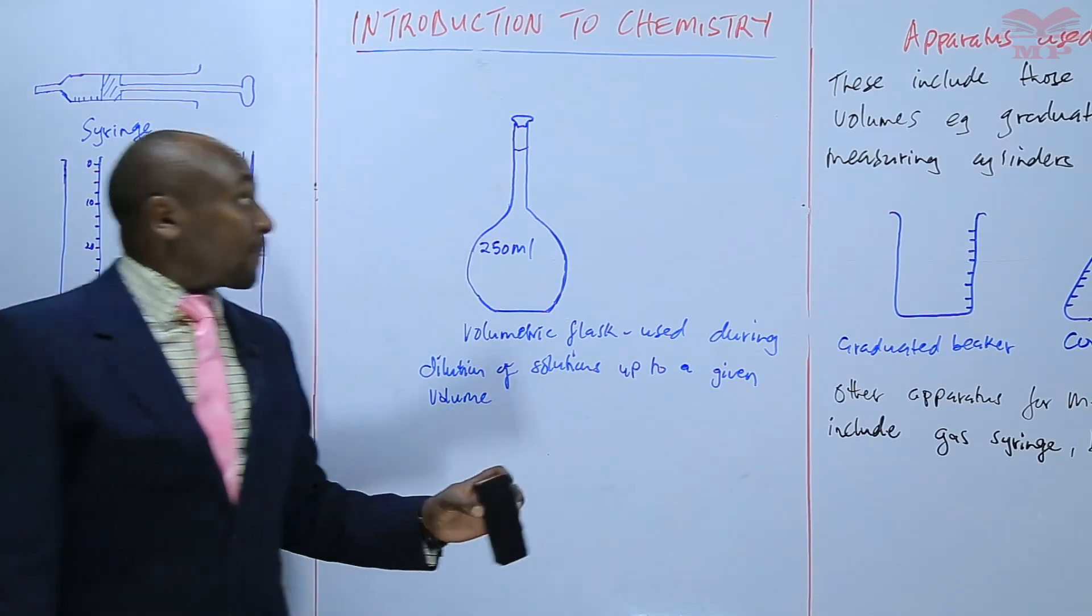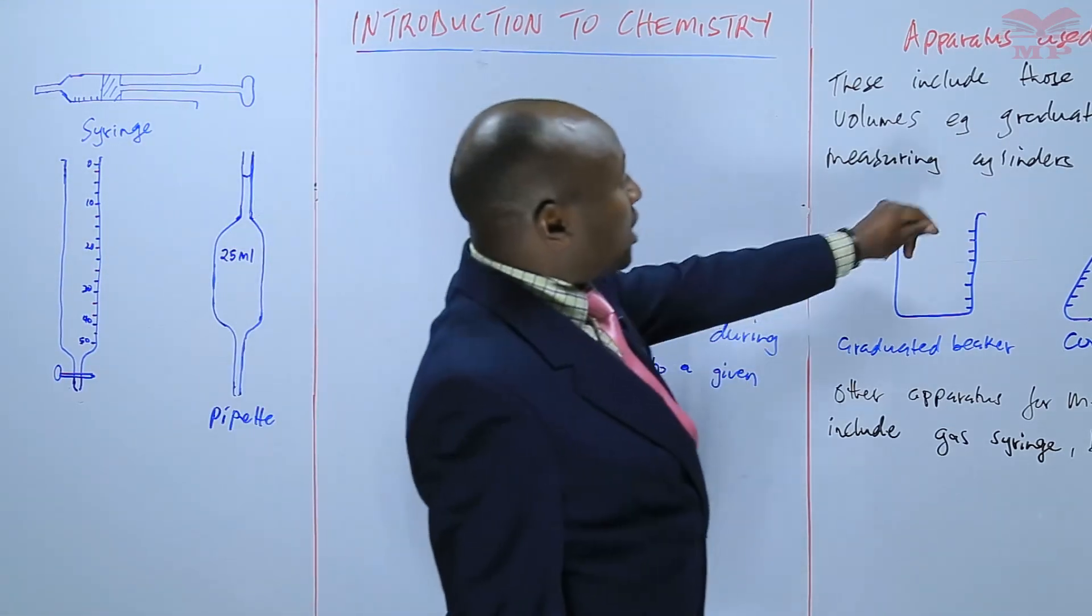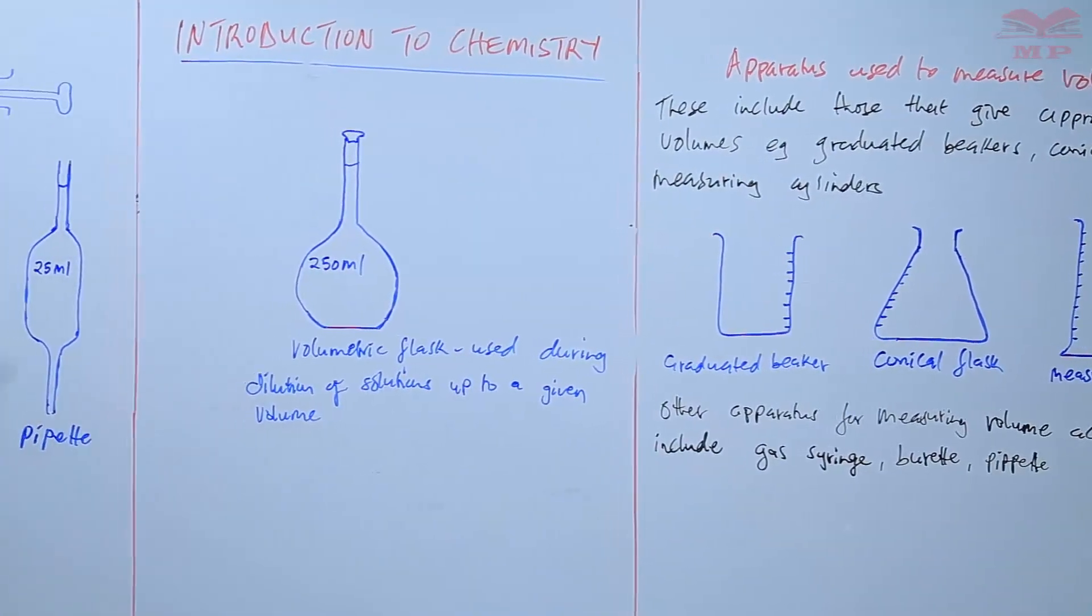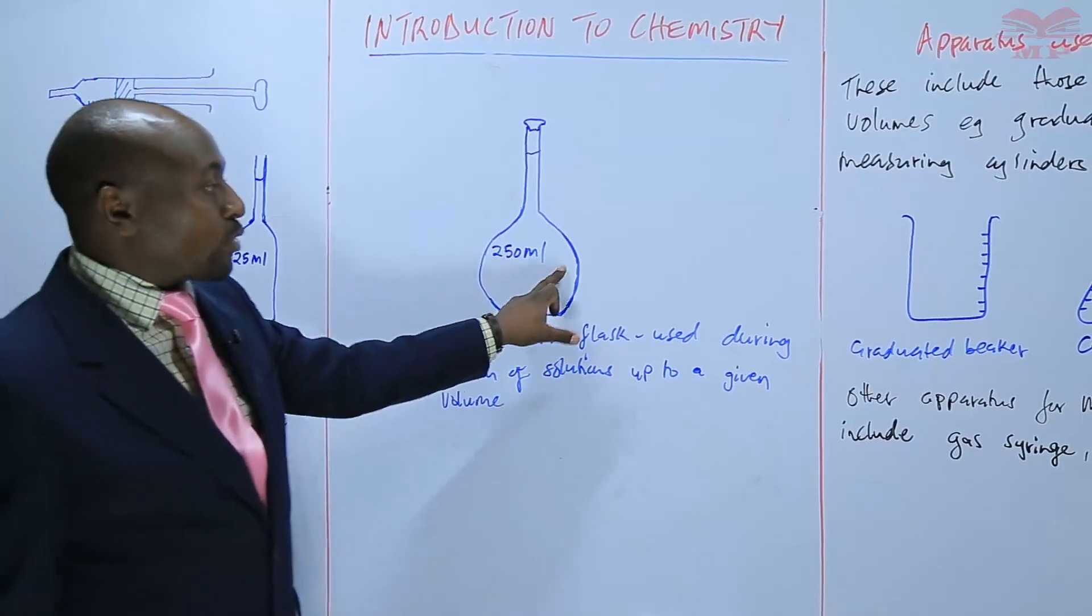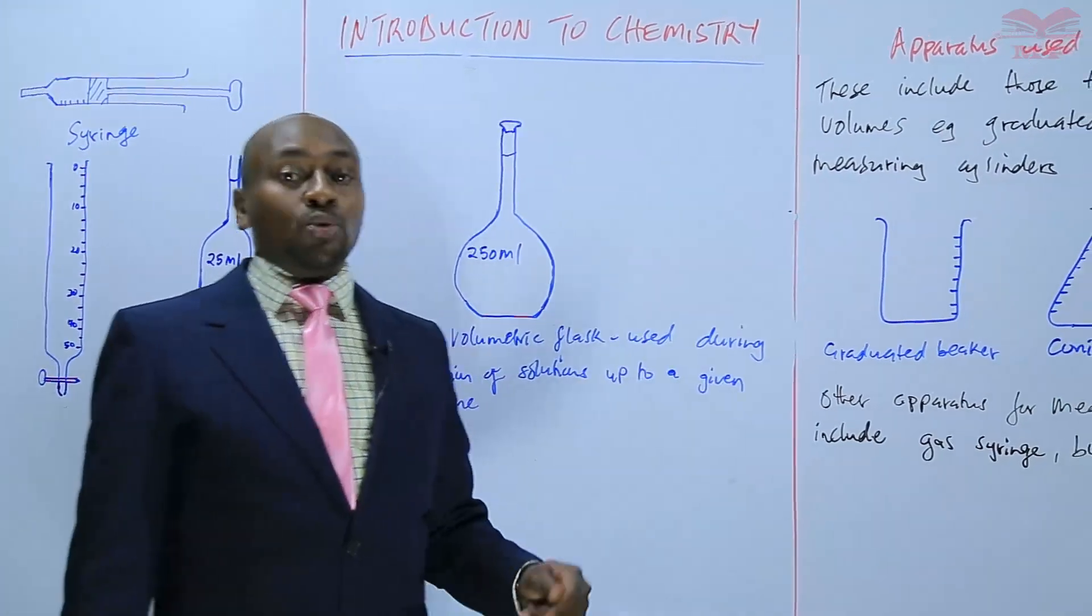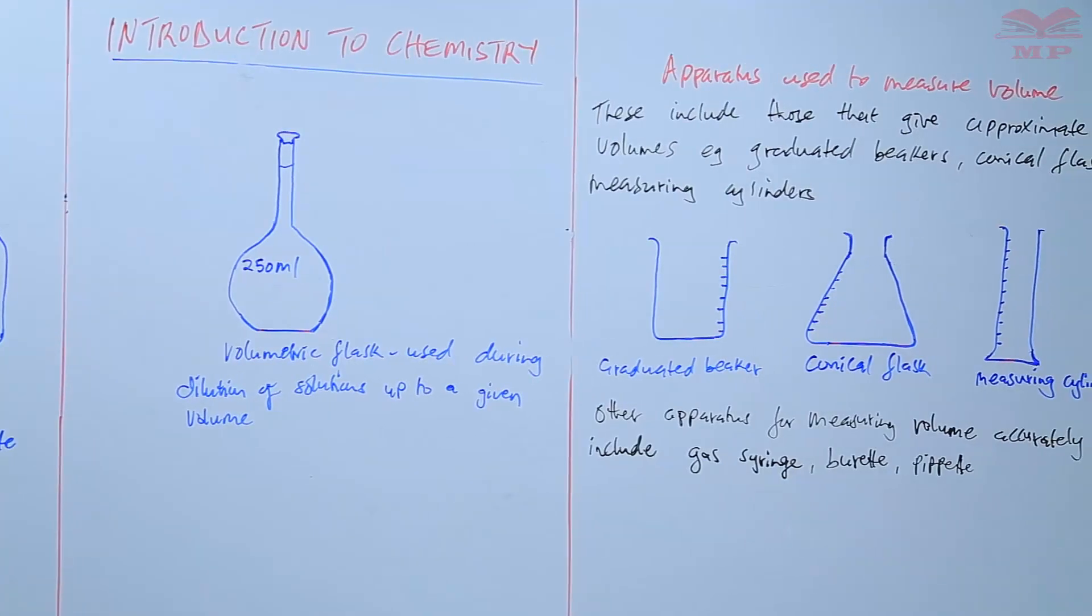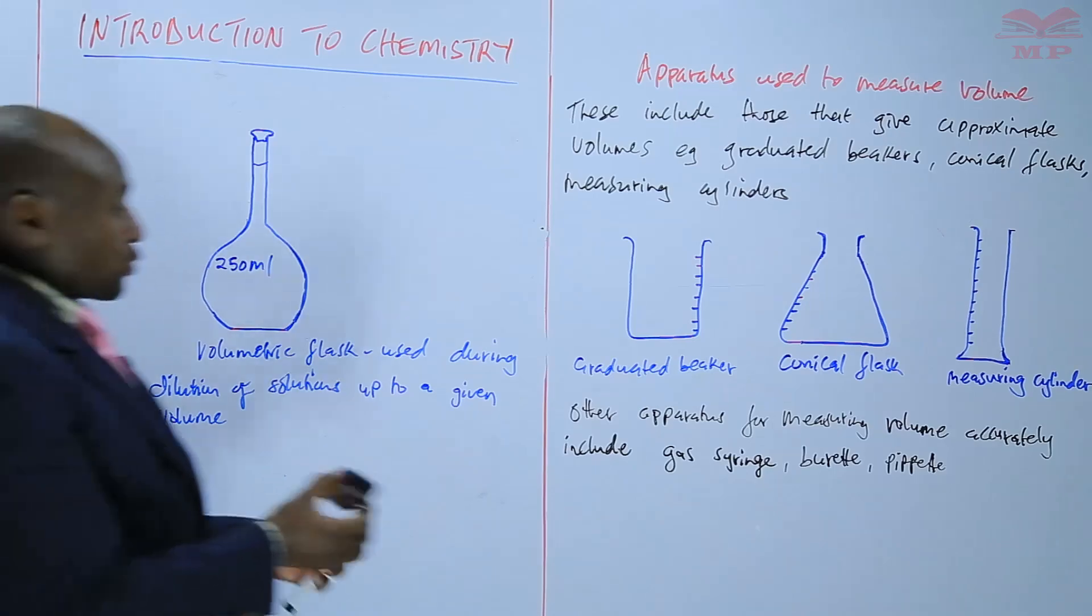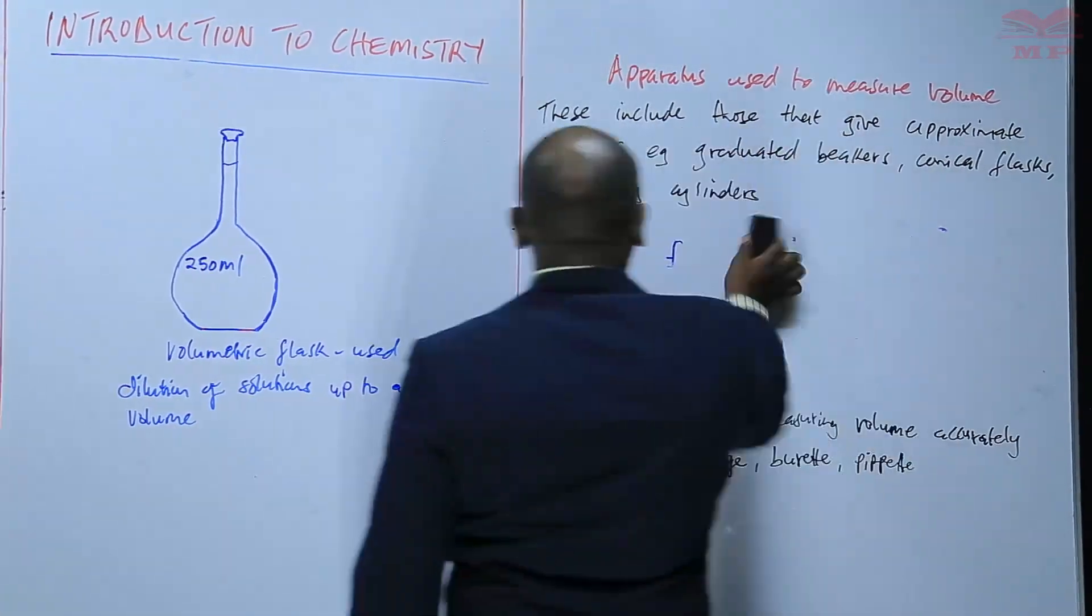So basically, those are the apparatus that we use to measure volume. There are those that measure approximately, and we have those that measure more accurately. So depending on the level of accuracy that is required, then that dictates which of the apparatus to use. So we'll have an assignment on that.